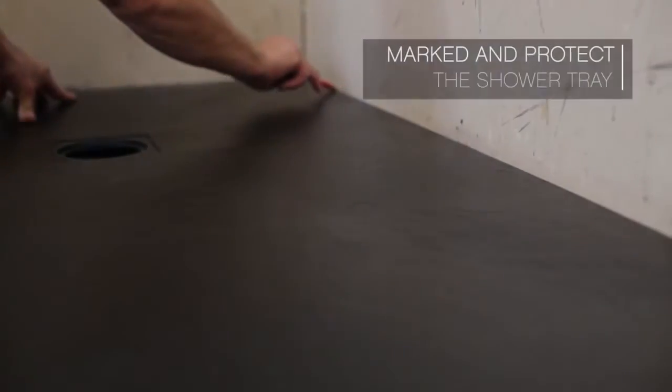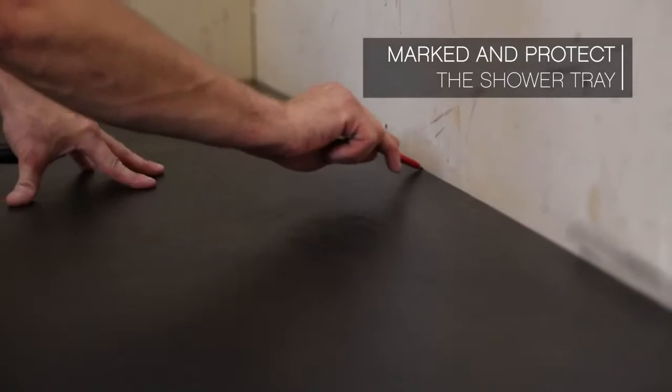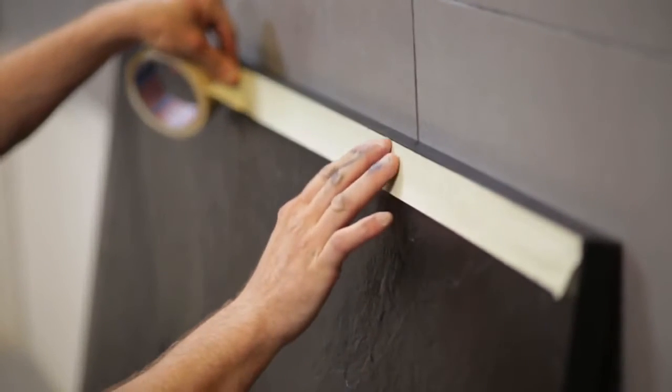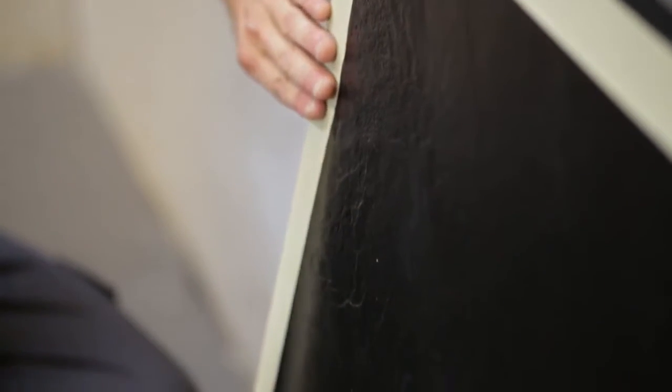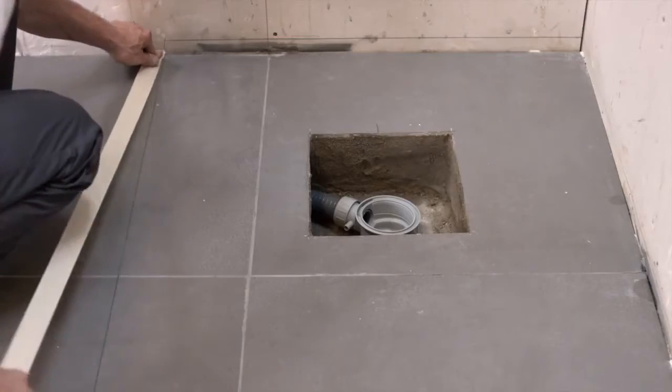Place the shower tray and mark out its perimeter. Protect the perimeter surface with adhesive tape and the pavement outside the perimeter in order to avoid filler contamination.